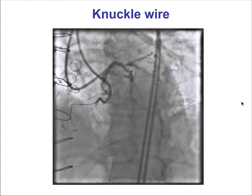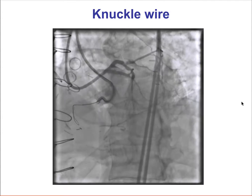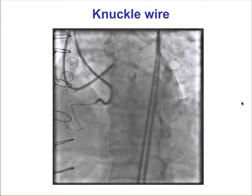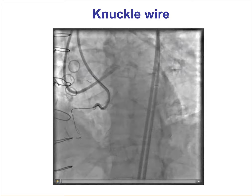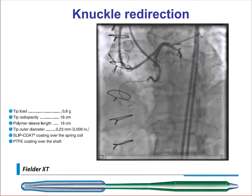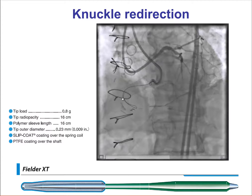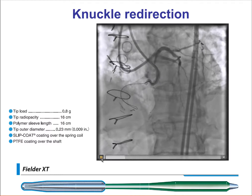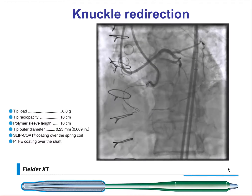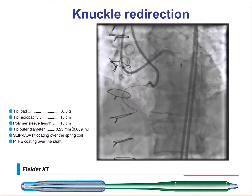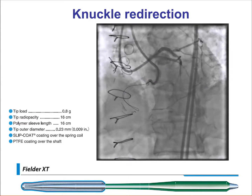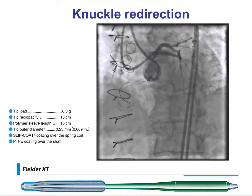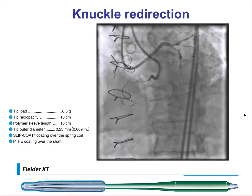We then used a knuckle wire — a Fielder XT guidewire — to bypass that side branch and advance into the distal vessel. After further redirection, we were able to advance the knuckle around the right coronary artery into the distal portion. The Fielder XT wire is the preferred wire for knuckling because it has a soft tip that forms very tight knuckles, and also has a 16 centimeter radiopaque tip, which facilitates visualization of the guidewire in the distal vessel.